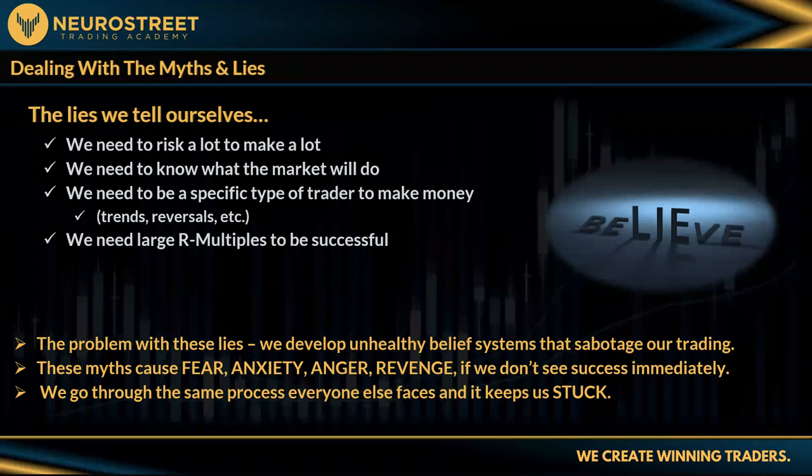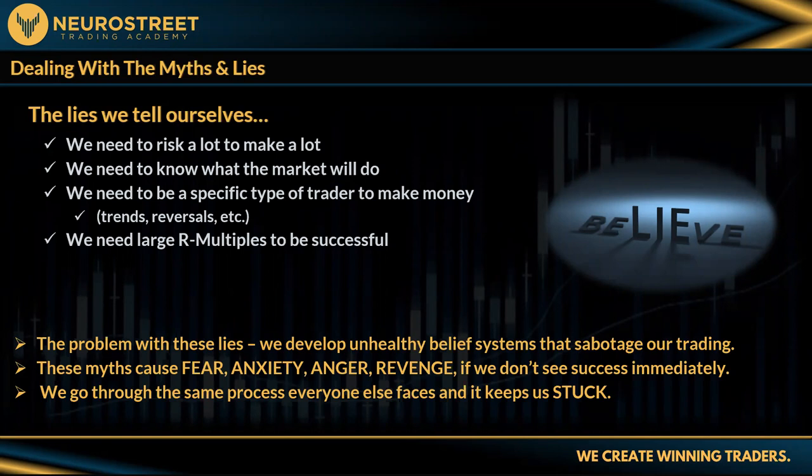Another myth: we need large R-multiples to be successful. This is a touchy subject — everybody has their own philosophy on risk-reward. If you're trading with a prop firm you might need a different R-multiple than a standard trader trading their own money. Personally, I really like one-to-one risk: make one, in and out, go to the next trade. It's easy to figure out the numbers. If two out of three trades are successful at one-to-one, I'm good to go.